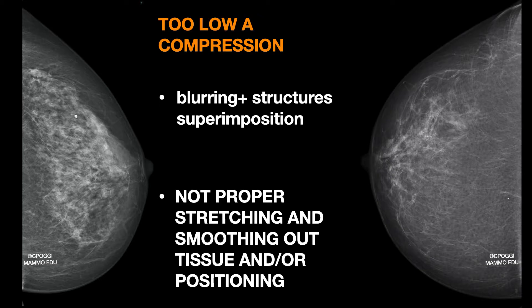This is a dense breast. You can see how much an inadequate compression could degrade the image quality. Sometimes, though, the blurring is present but in a micro-zone scarcely visible, and sometimes an artifact like that is due to not proper stretching and smoothing out tissue more than compression.